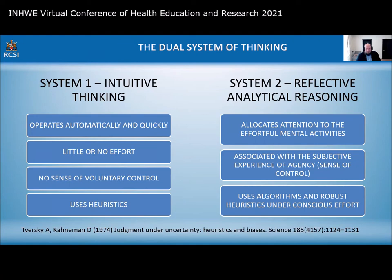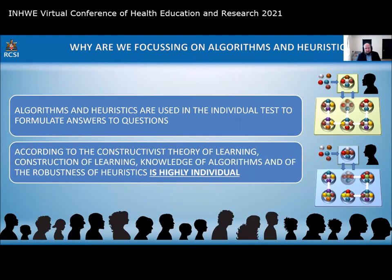System 1 and System 2 thinking comes from Tversky and Kahneman's work in the early 1970s. System 1 thinking is intuitive — automatic and quick, without real effort or voluntary control. Heuristics are used principally in intuitive thinking. System 2 thinking is reflective and analytical reasoning, where attention is paid to consciously working through a problem to find a solution. This uses algorithms and robust heuristics under conscious effort.